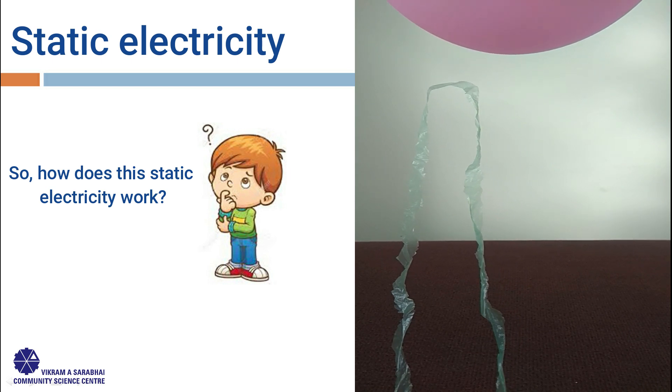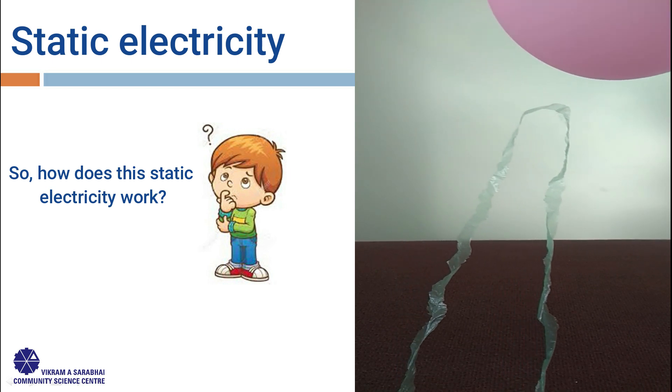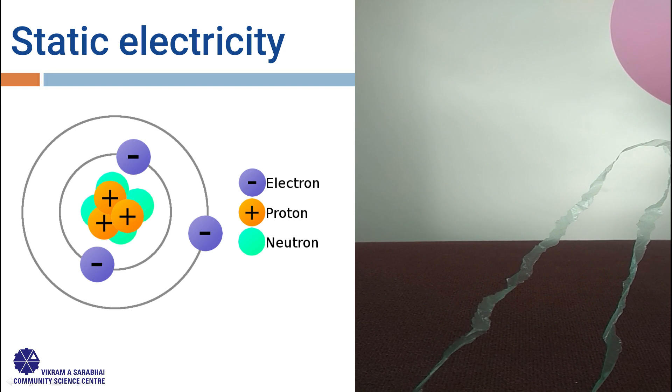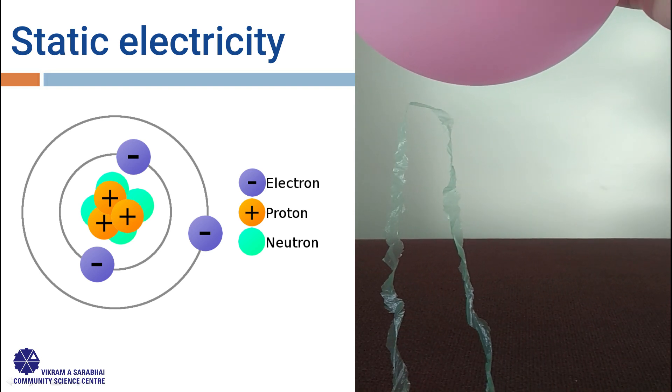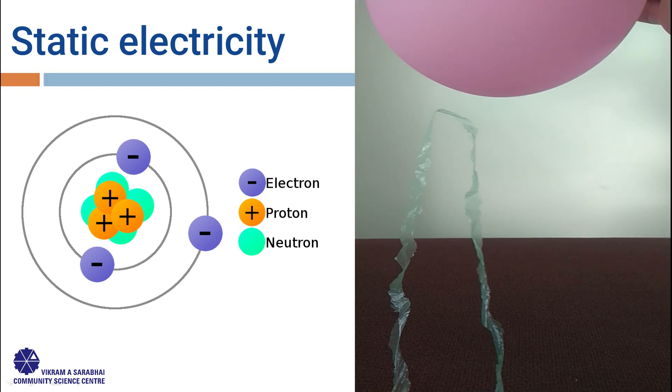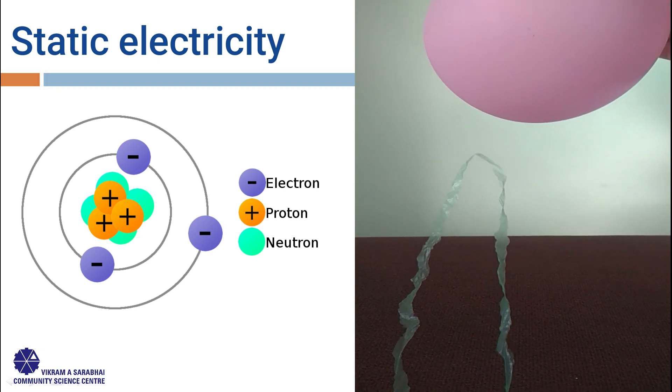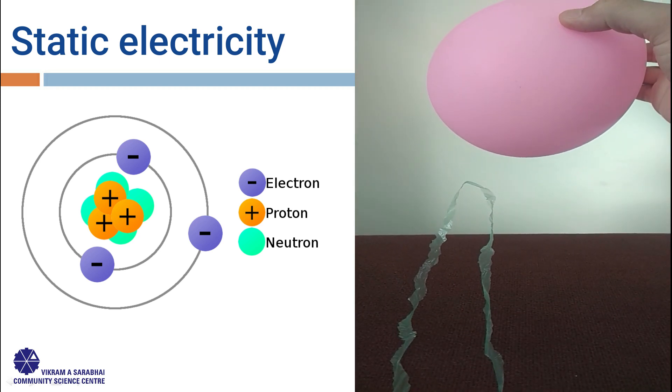How does this static electricity work? All materials are made up of molecules, and all molecules have tiny atoms with positively charged protons, neutral neutrons, and negatively charged electrons floating around.